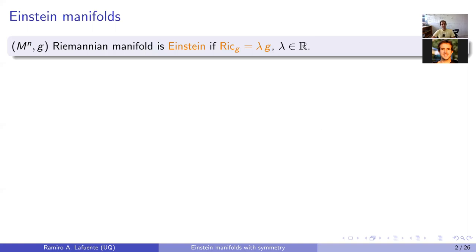A Riemannian manifold is called Einstein if it has constant Ricci curvature — that is, the Ricci tensor is a multiple of the metric tensor. Remember these are zero-two type tensors on the manifold, so it makes sense to write such an equation.